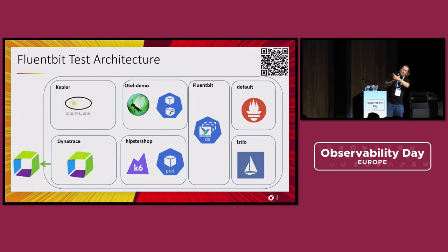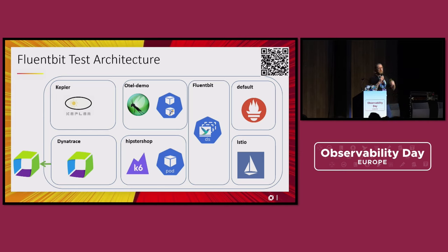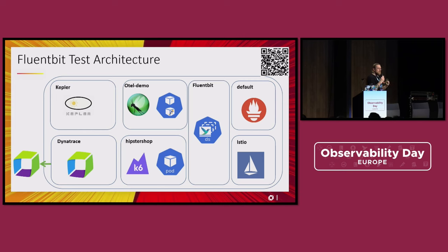For the tests — there's a repo in the QR code with all the tests I did, so please feel free to do it in your own environment. I picked two demo applications: the Hipster Shop and the OpenTelemetry demo. Then I deployed several Prometheus exporters: Kepler, kube-state-metrics, node exporter, and I have Istio so all the Envoy sidecars are producing metrics as well.